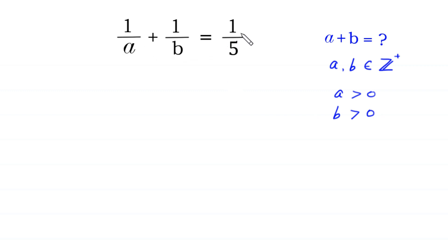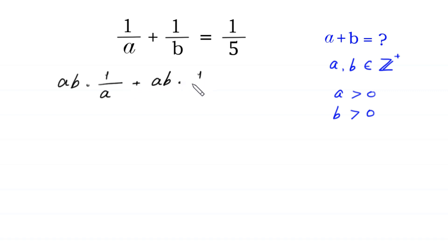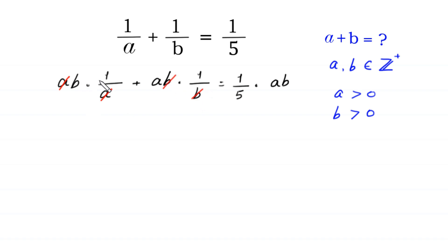We start by multiplying both sides of this equation by the LCM, which is ab. So ab times 1 over a, plus ab times 1 over b, equals 1 over 5 times ab. The a cancels with a, and b cancels with b, leaving b plus a equals ab over 5.